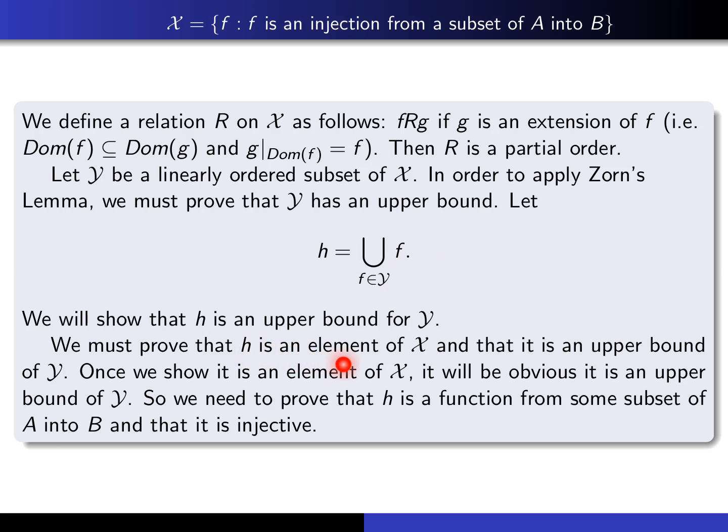First, we have to convince ourselves that H really is an element of X — that it's a function and an injection from some subset of A into B. Once we show that, it will be obvious that H is an upper bound of Y, because as the union, its domain contains any of the domains of functions in Y, and restricting H to any such domain gives agreement. But we must prove it is a function and that it is injective.